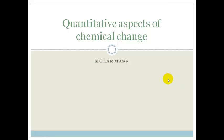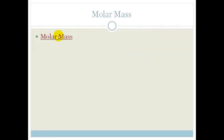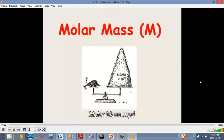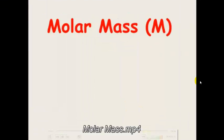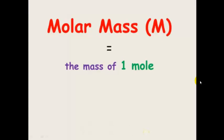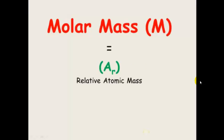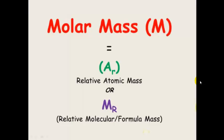So far we've learnt about the mole, what it is and how big it is. Today we're going to learn about the molar mass, what it is and how we can use it. Molar mass is the mass of one mole of any substance. It equals the relative atomic mass of a substance, or if it's a compound, the relative molecular or formula mass of that compound.